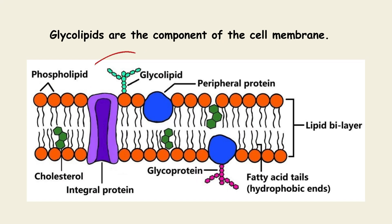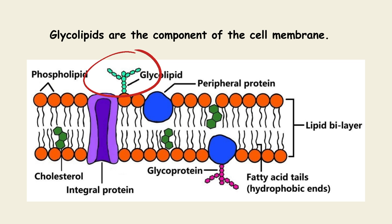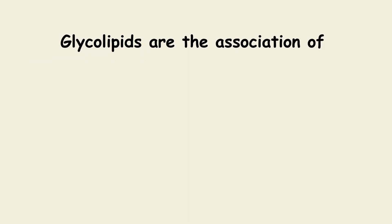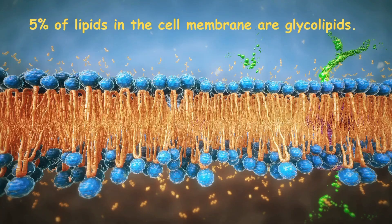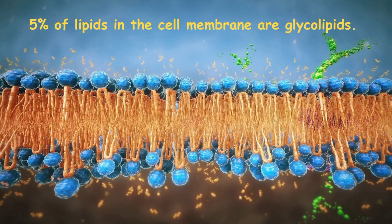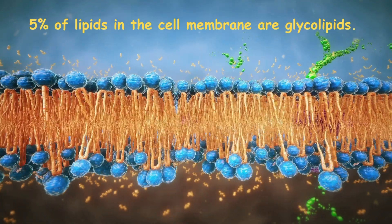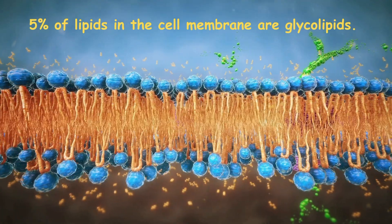Glycolipids are the components of the cell membrane, or we can say that glycolipids are the parts of the cell membrane. Glycolipids are made up of carbohydrates and lipid. 5% of lipids in the cell membrane are glycolipid.